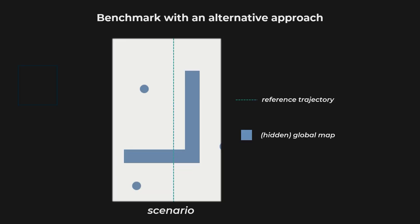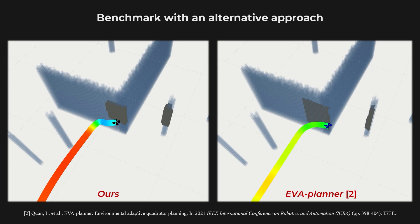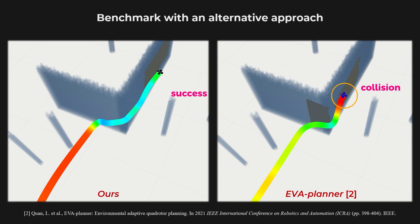In particular, we compare the proposed approach with one based on a handcraft objective function for agility adaptation. In a representative scenario, our policy makes cautious decisions when the FOV changes towards an unknown direction, reflecting perception awareness. The benchmark approach incorrectly performs dangerous behaviors due to its inability to capture some aspects of the problem.